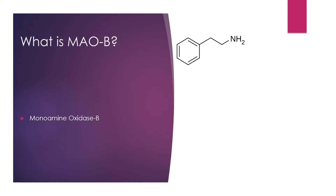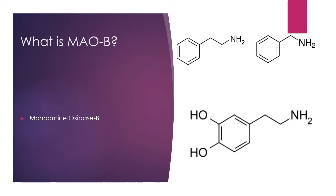Shown here is phenylethylamine, benzylamine, and dopamine. All of these substrates have in common a phenyl aromatic ring and an amine group located at the end of a hydrocarbon chain.